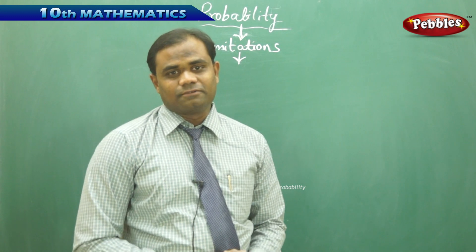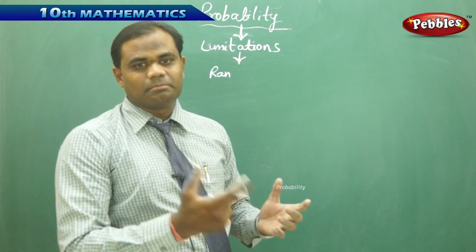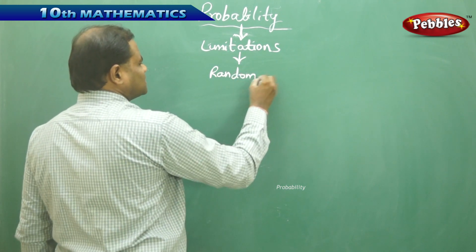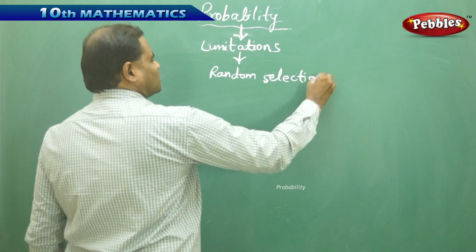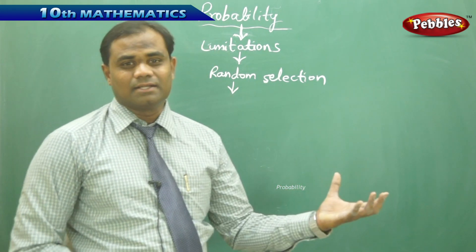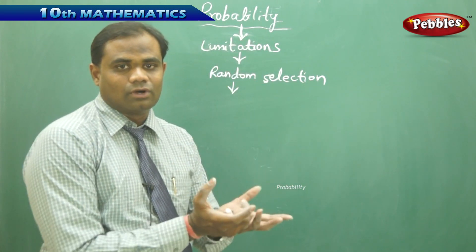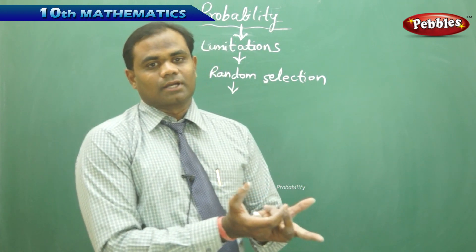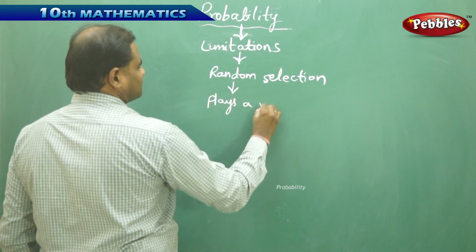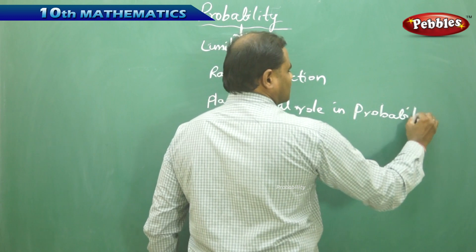In many problems we encounter the phrase 'random selection' — a ball is picked randomly. What does the word 'random' mean in probability? For any probability to hold true, we must randomly select. For example, from a bag of balls I randomly pick one without any rules, smartness, or cheating applied in the picking. Random selection plays a vital role in the calculation of probability.